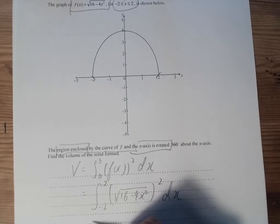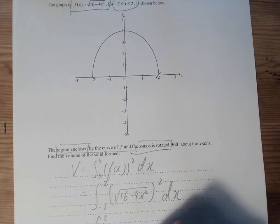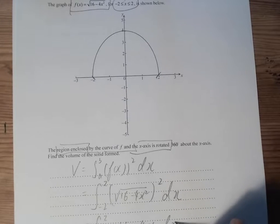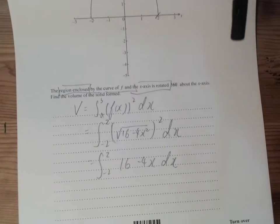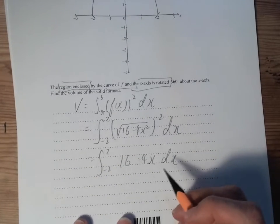We remove the square root and then we have from -2 to 2 of 16 minus 4x squared dx. And then it can become pretty handy there.